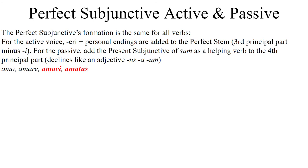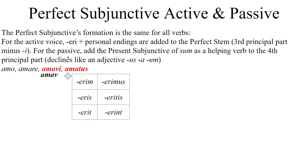For the perfect subjunctive active voice, take the verb's perfect stem by going to the third principal part and chopping off the letter I, then add the following endings. It's the tense marker -eri (E-R-I), and then -m, -s, -t, -mus, -tis, -unt. So all in all, you get: -erim, -eris, -erit, -erimus, -eritis, -erint — added to the perfect stem.